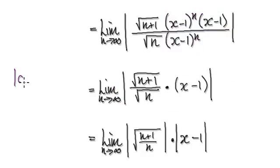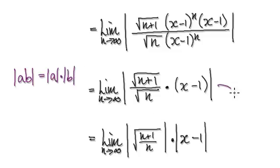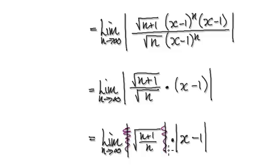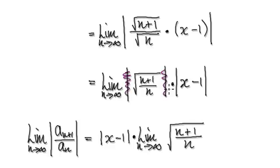Remember, the absolute value of a times b is the same as absolute of a times absolute of b. That takes you to the next step. And remember, n is always positive, so this will always be positive — the whole expression will always be positive. When you take the square root of a positive, it's positive, so you don't really need the absolute term and can discard it.